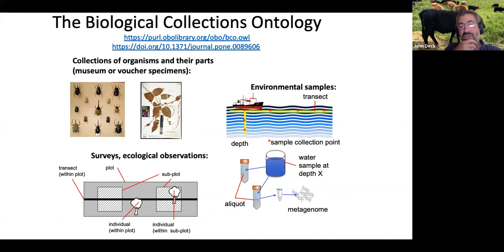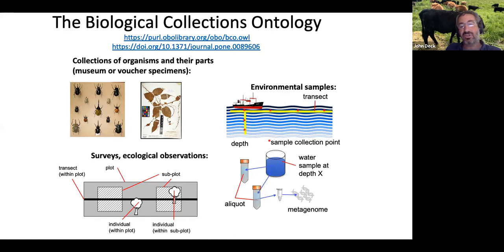The Biological Collections Ontology — I mentioned the workshop in 2013 with Barry Smith where we had a hackathon six months later where we came up with the first version of the BCO. There's since been a publication, with a DOI and the actual ontology you can link to. You can see it covers museum specimens, surveys, ecological observations, and environmental samples. All these things go back to the material sample and material sample identifier across different domains — a way to harmonize across these domains.